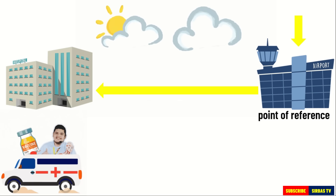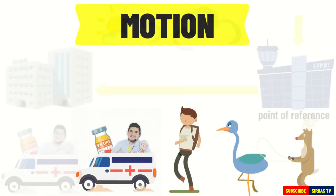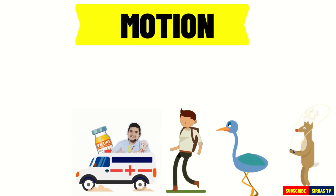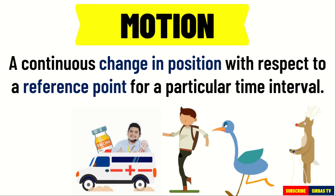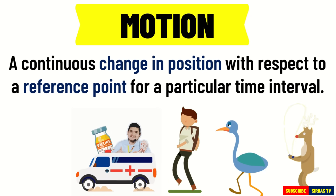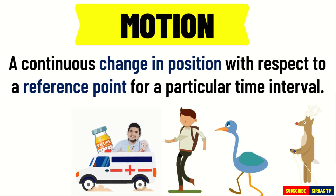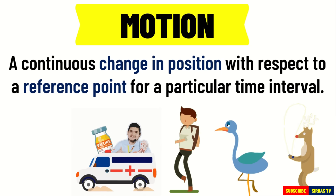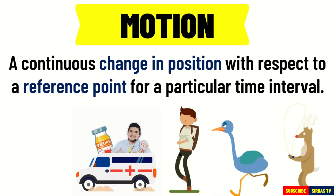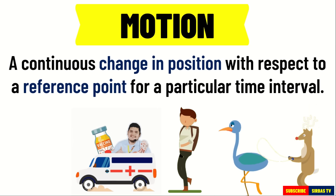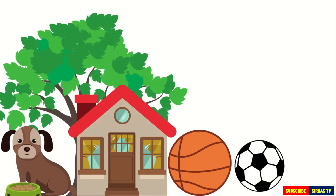To define, motion is a continuous change in position of an object with respect to a reference point for a particular time interval. When the object is not changing its position at a given time interval, it is said to be at rest.